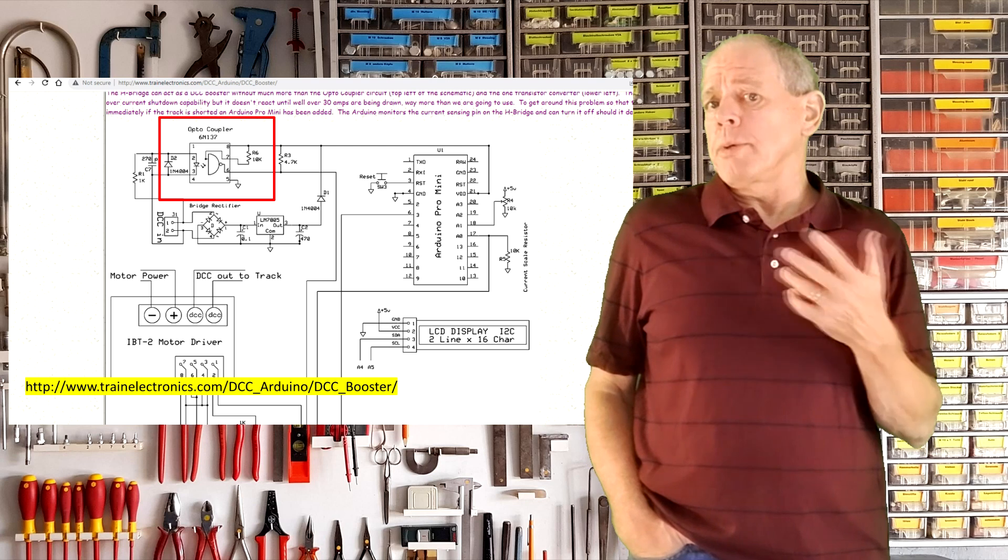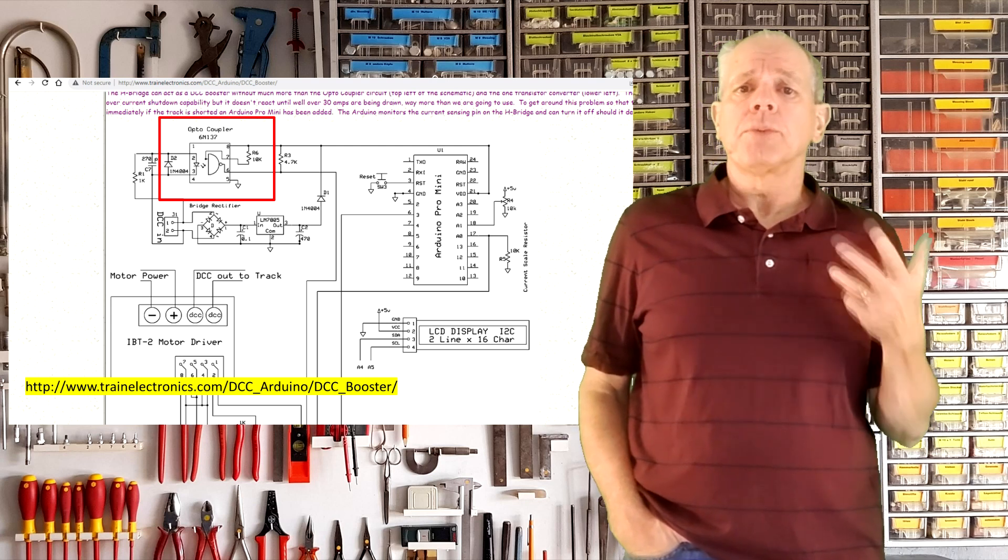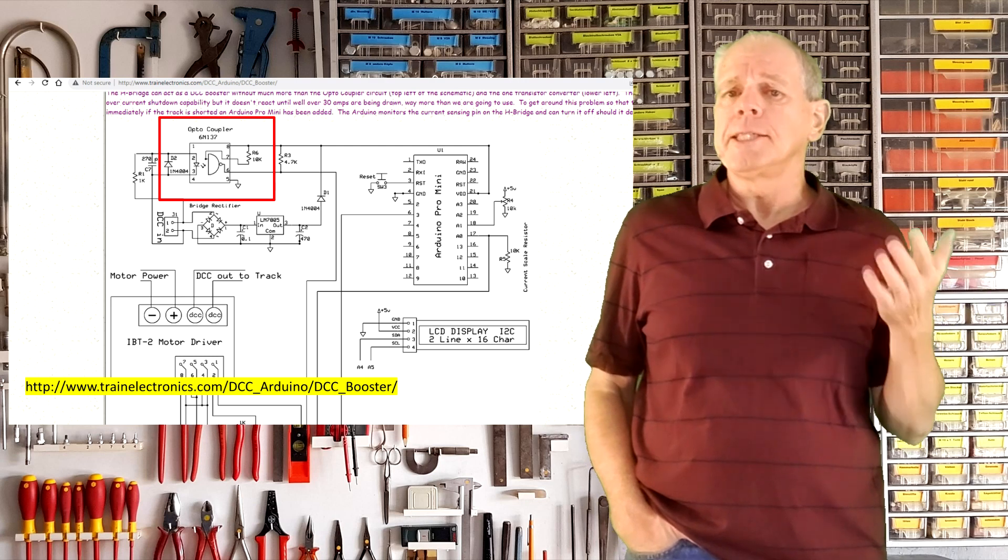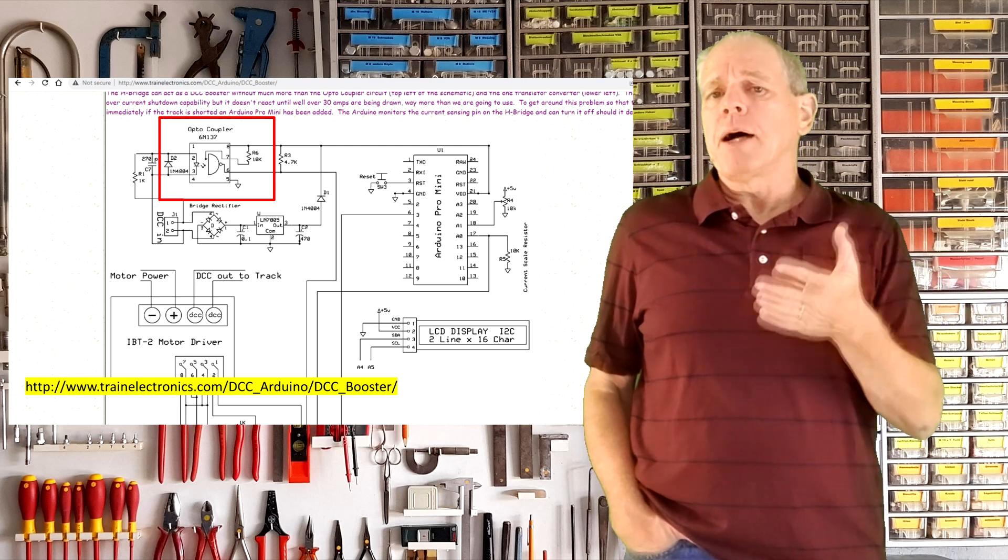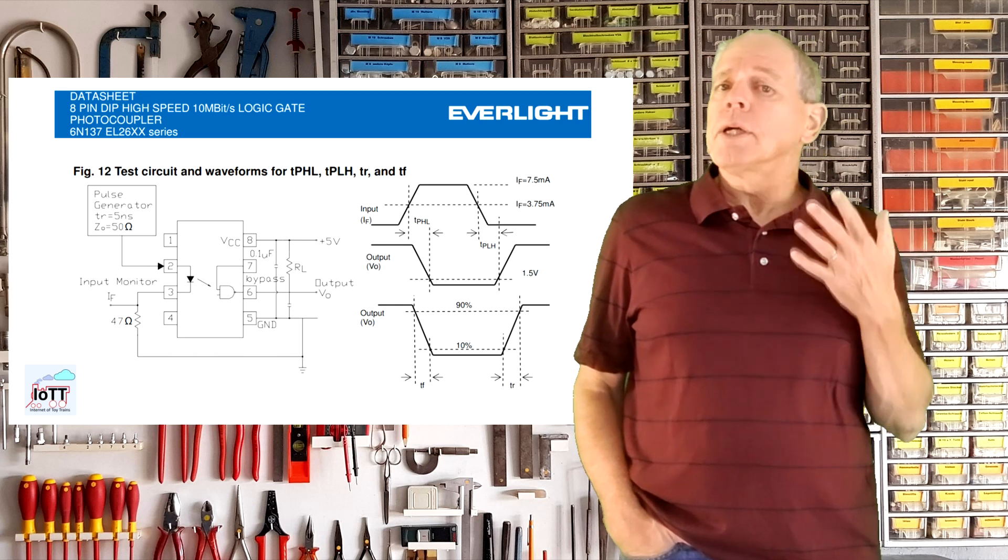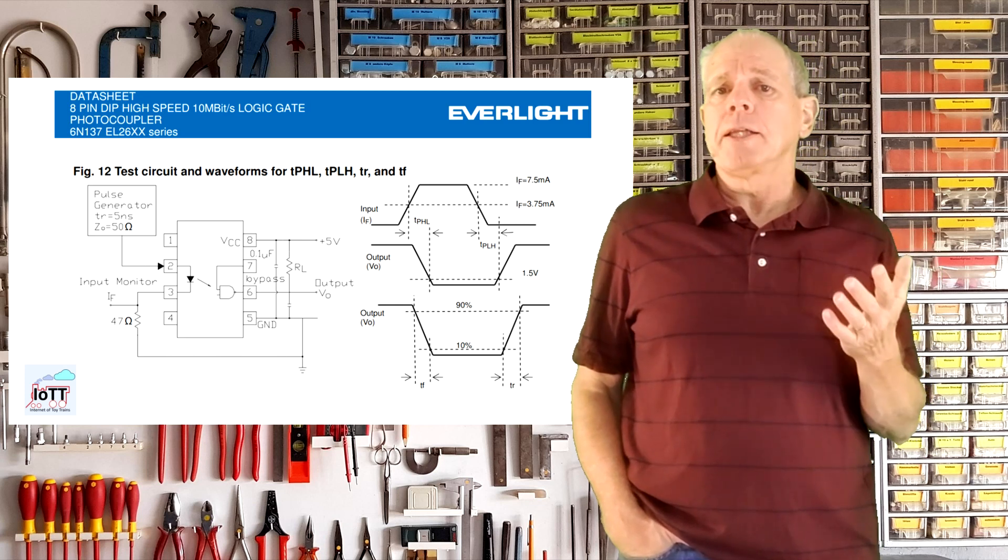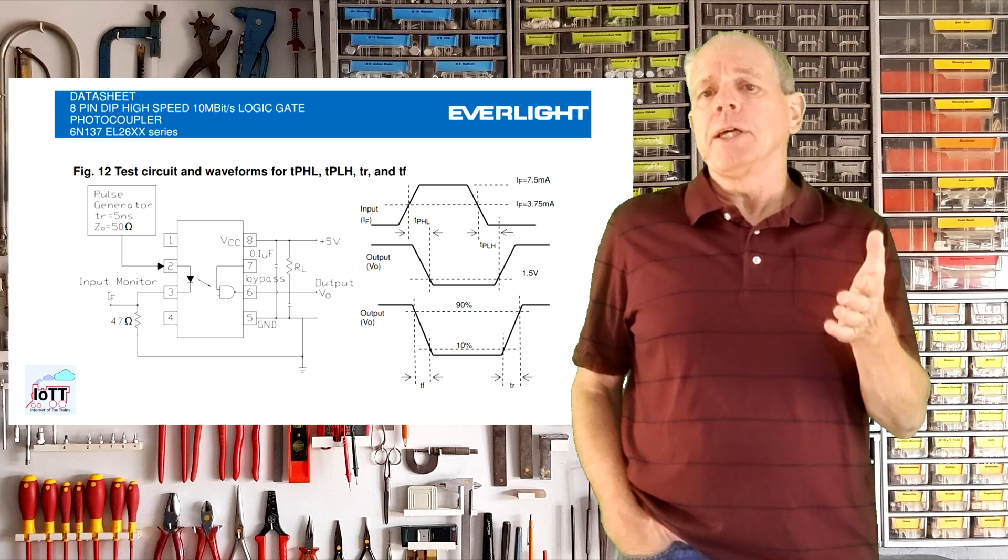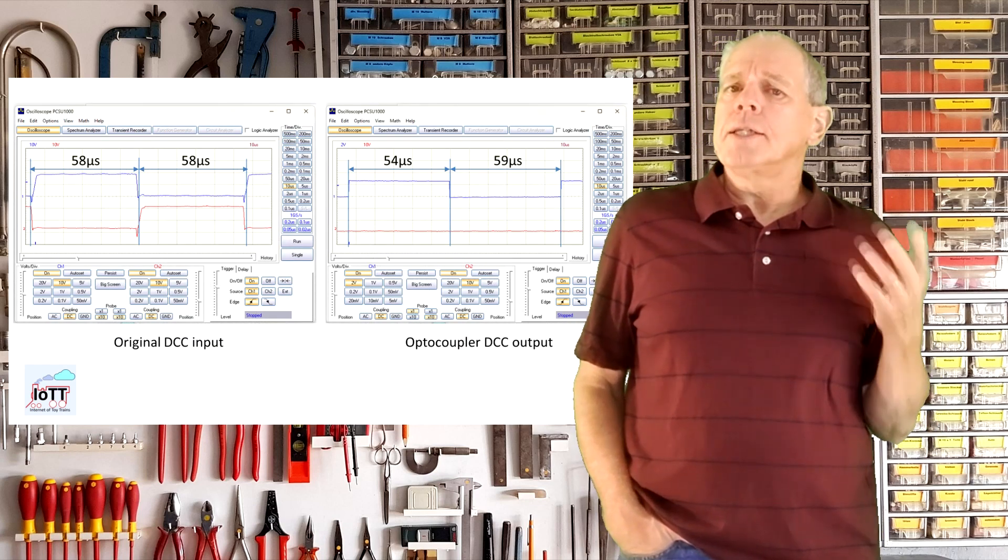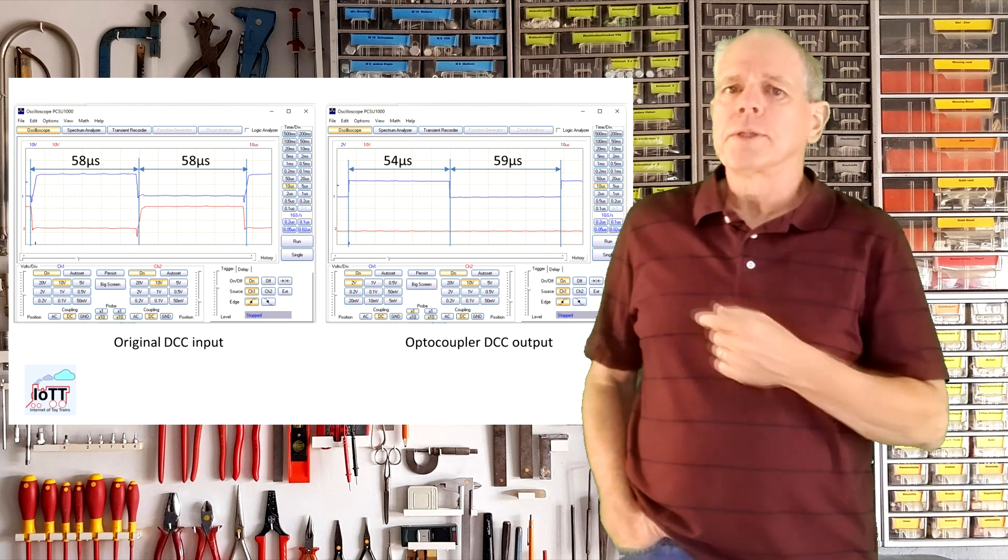The common method of most hobby projects is using an optocoupler to achieve a galvanic separation of the incoming DCC signal and the power supply of the booster. Unfortunately, using an optocoupler has the disadvantage of creating an asymmetry due to the threshold of the photodiode. As you can see in this oscilloscope screenshot, both half bits of the original signal have a length of about 58 microseconds.